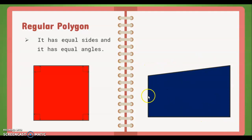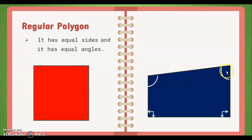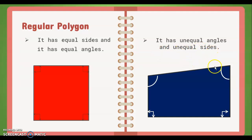Moving on to this next example of a quadrilateral — as you can see, the sides are not equal, and the angles are also not congruent. These two angles are 90 degrees or right angles, this angle here is an obtuse angle, and this angle here is an acute angle. So it has unequal angles and unequal sides, and this polygon is called an irregular polygon.